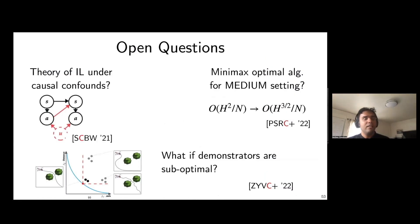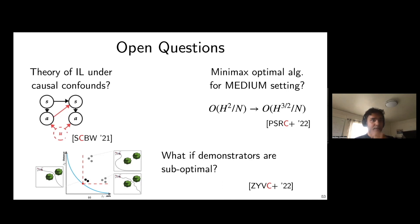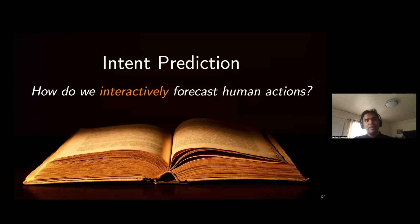We're not done — many open questions remain. Can we deal with causal confounds where the human has privileged information the learner doesn't? What are good algorithms for the medium setting with tighter theoretical bounds? And we assume human demonstrations are optimal, but humans are not — how can we outperform humans under mild conditions on the reward function? These are all areas of open research.